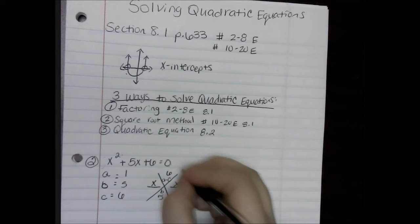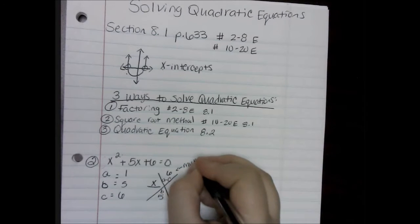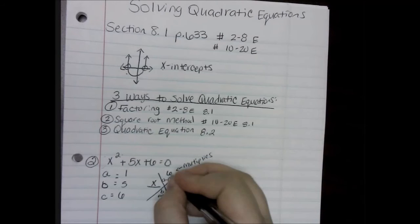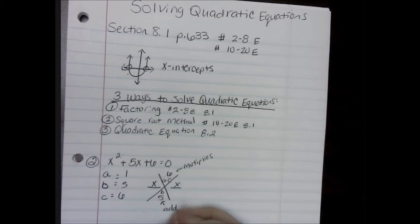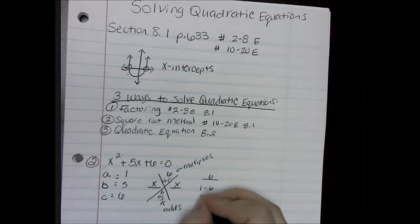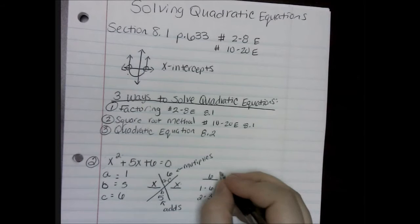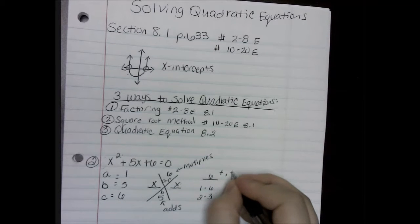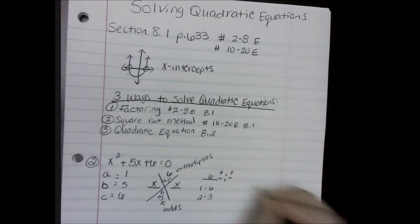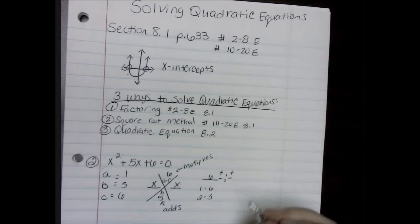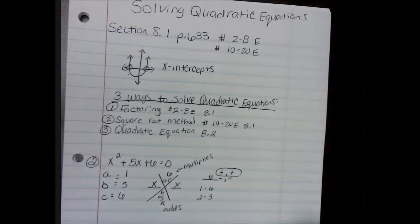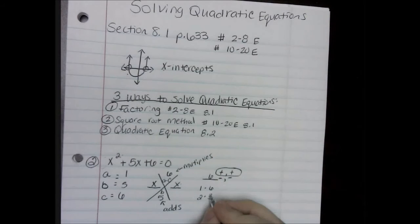We want to find out what multiplies to give you the top number and adds to give you the bottom number. So we write out the factors of 6: 1 times 6 and 2 times 3. We need to look at our signs — the only way to get a positive number when multiplying is positive times positive or negative times negative. Since we need to add them to get a positive 5, we use positive and positive. The answer is 2 and 3.